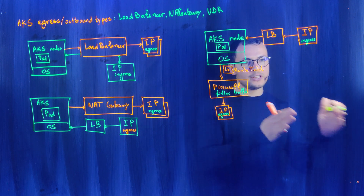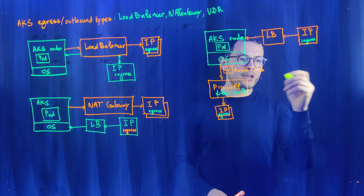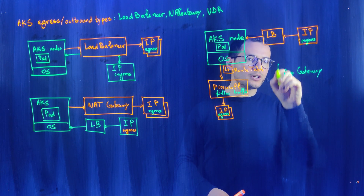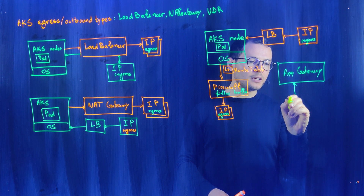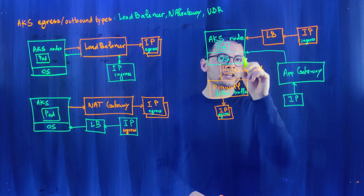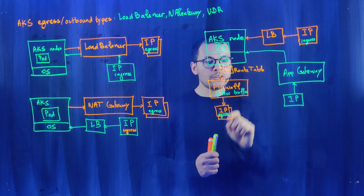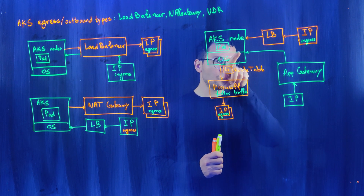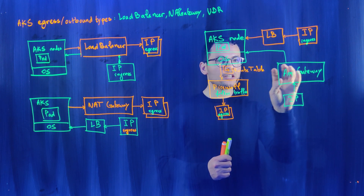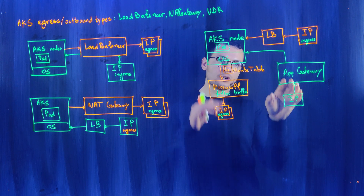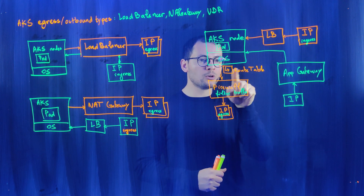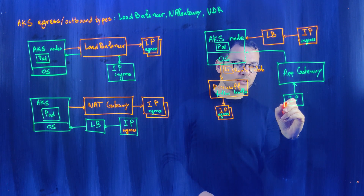A second solution is to use Azure Application Gateway to manage ingress separately from the firewall. The Application Gateway has its own public IP and routes traffic into the AKS node. The response traffic does not route through the firewall because the Application Gateway is injected into the AKS virtual network — traffic within the same virtual network is considered internal and is not subject to the route table forcing it through the firewall.